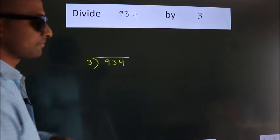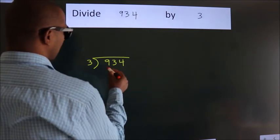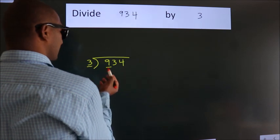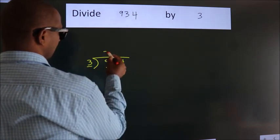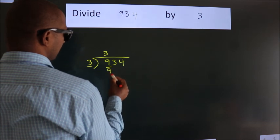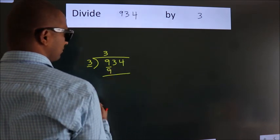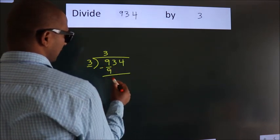Next. Here we have 9, here 3. When do we get 9? In 3 table, 3 3s, 9. Now, we should subtract, we get 0.